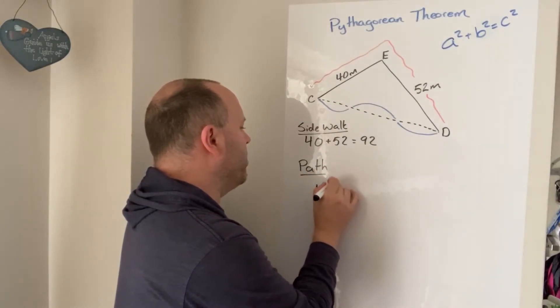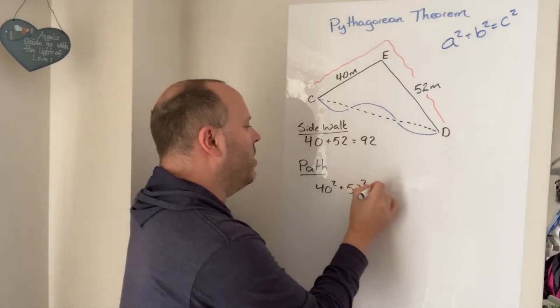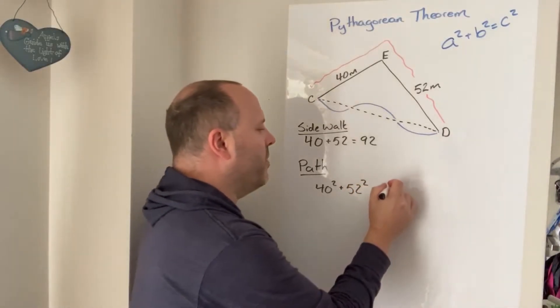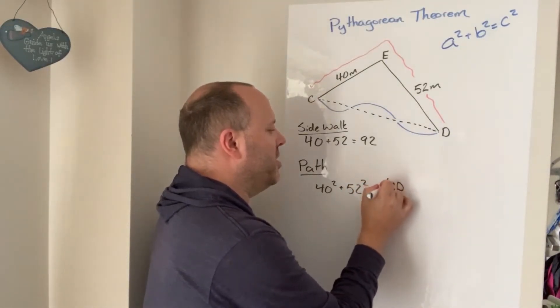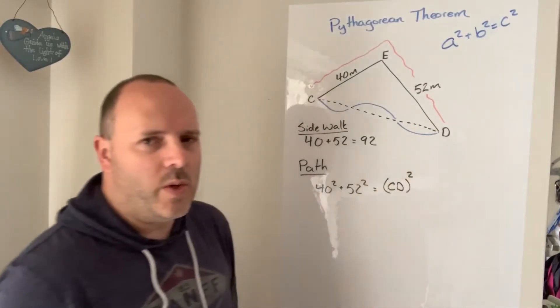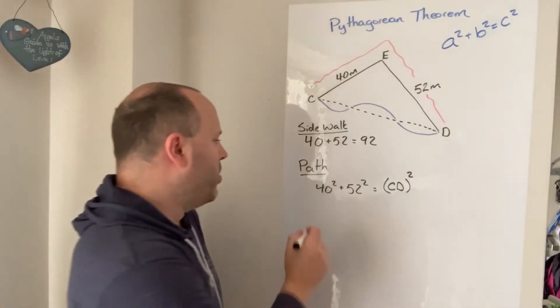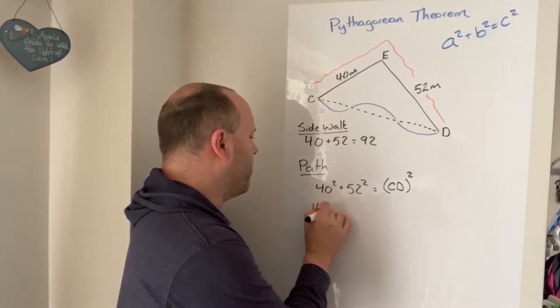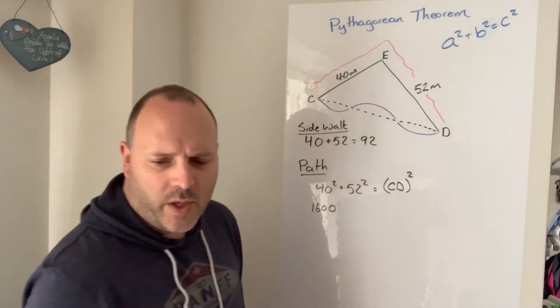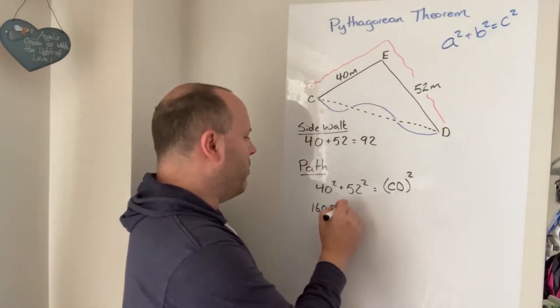So I'll do 40 squared plus 52 squared, that's the distance from C to D squared. 40 squared is 1600, 52 squared is 2704.